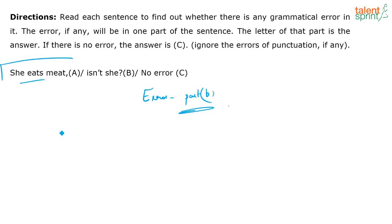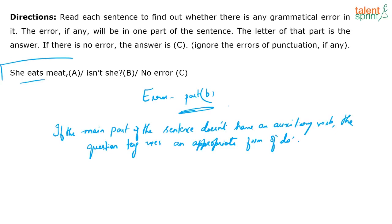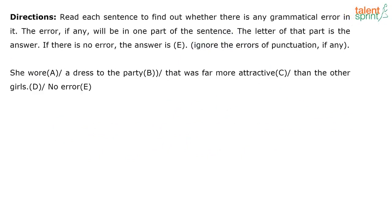In our context: 'she eats meat' — does she not? Contracted: 'doesn't she?' So the corrected sentence is 'She eats meat, doesn't she?' This shows you are thorough with your question tag concepts. Any errors pertaining to question tags, you should be able to identify them quickly. Let's move on to our next question error type.